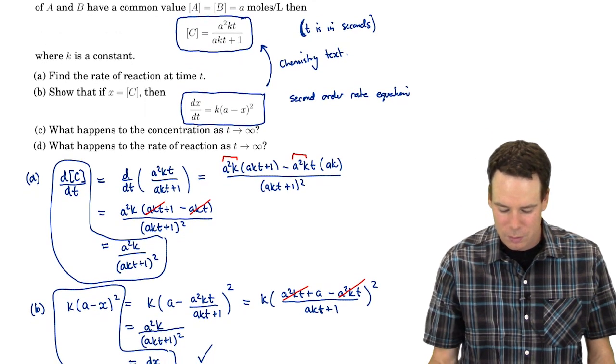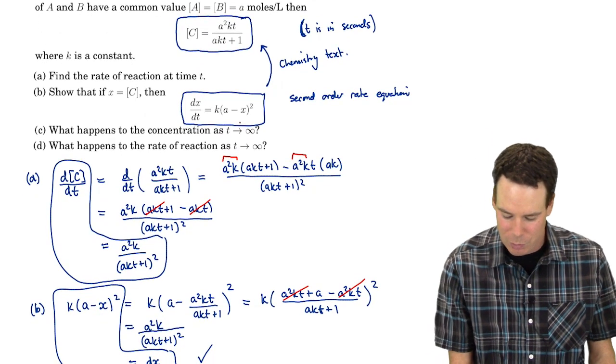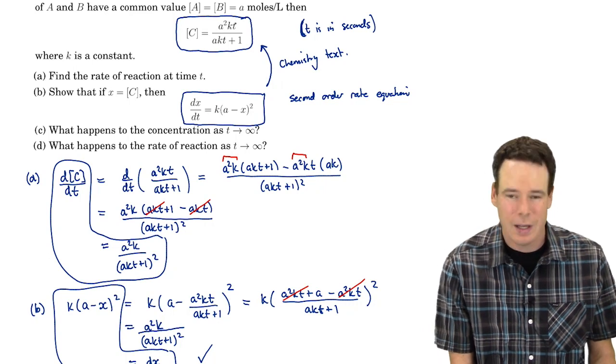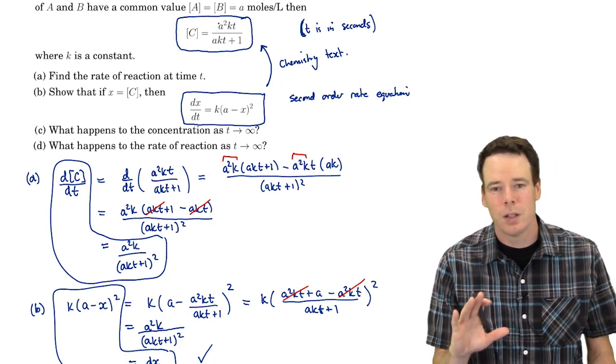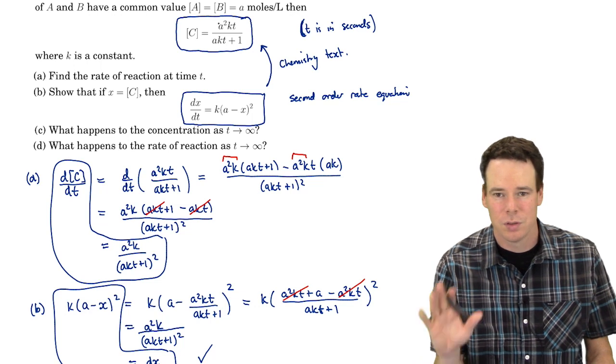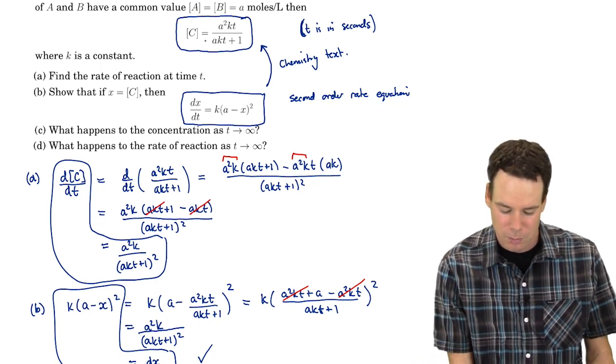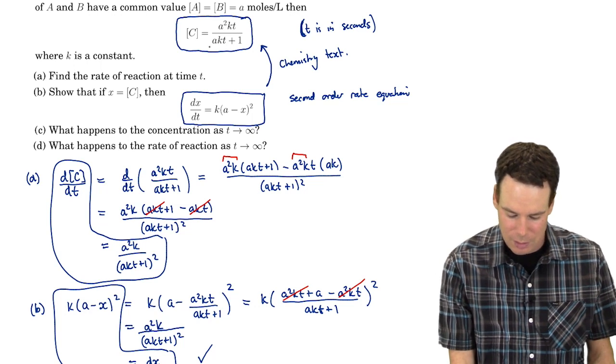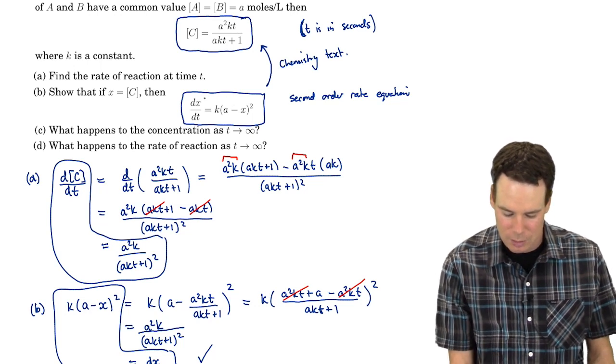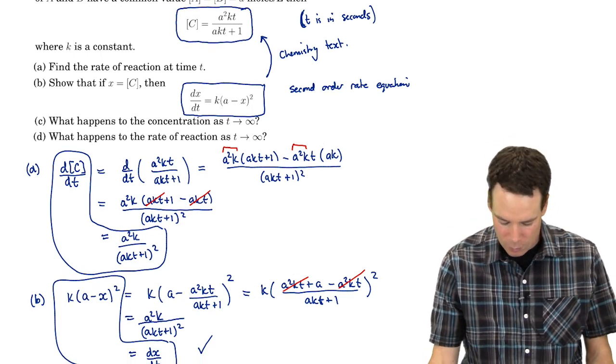But what that means is that if you're looking at your chemistry textbook and you've come across this second-order rate equation and you're wondering, how did they get that as a solution? Well, it's alright if you don't know how they got it as a solution. You'll see that in the next Calculus class. But you can verify it's a solution by doing what we just did here. Take that equation, differentiate it, see if it satisfies this equation here. And we've just done that.